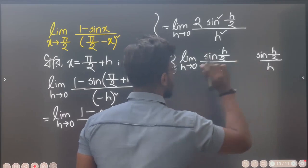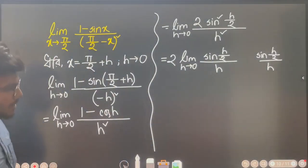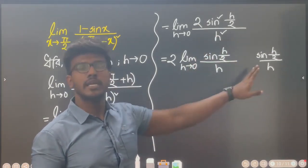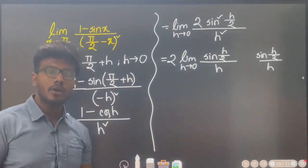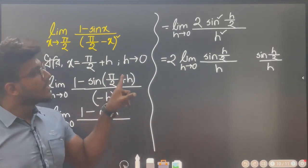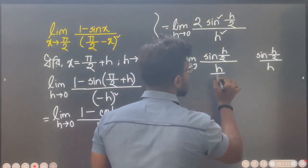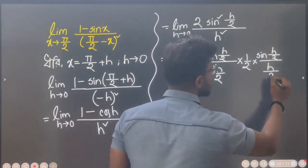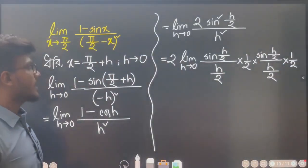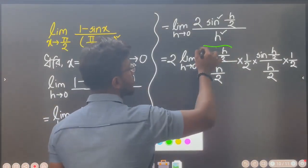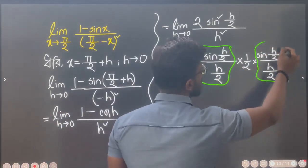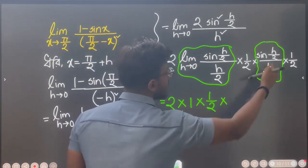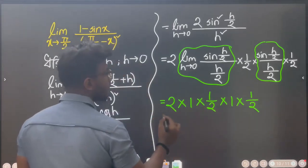So h squared equals 4 times (h by 2) squared. We see that sin(h by 2) over (h by 2) tends to 1 as h tends to 0. The two parts cancel out. 2 and 4 cancel to give half. We will have 1 into half, so the answer is one half.